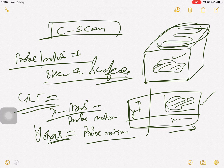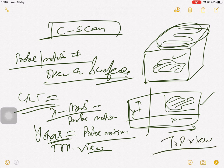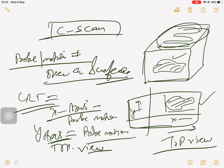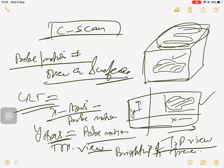The C-scan gives you a top view — a plan view of the defect. It can be directly recorded on an x-y plotter or similar equipment. The defect is shown on the CRT by the brightening of the trace. So this is your A-scan, B-scan, and C-scan.